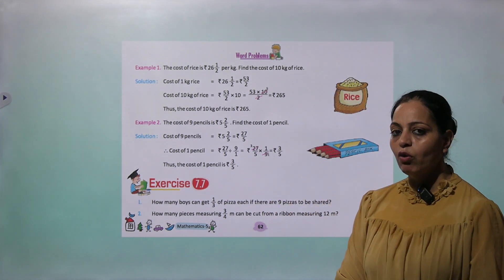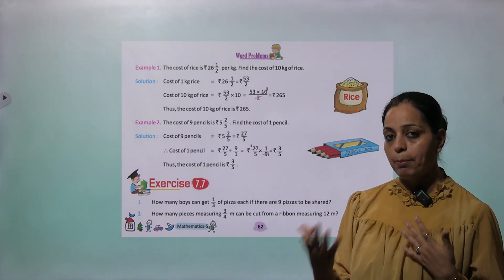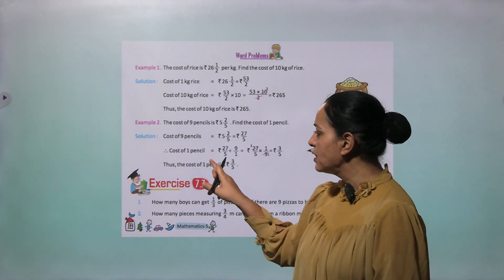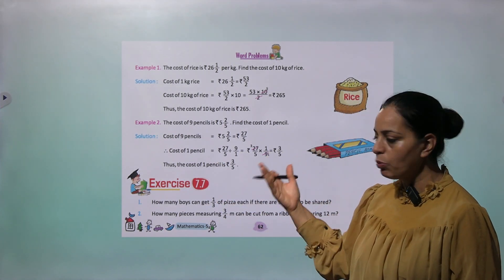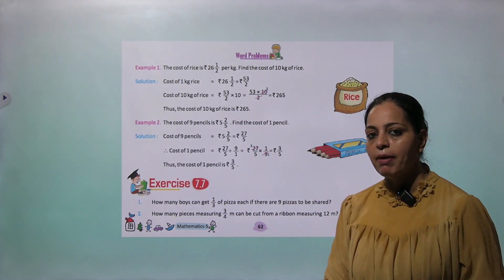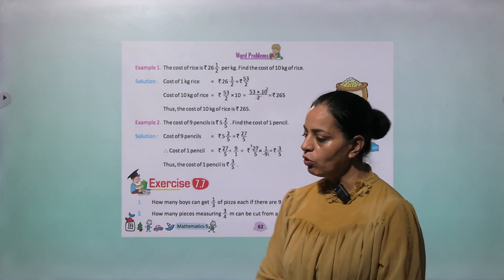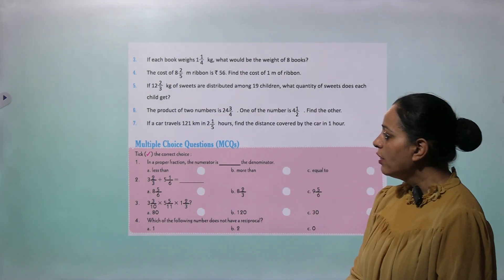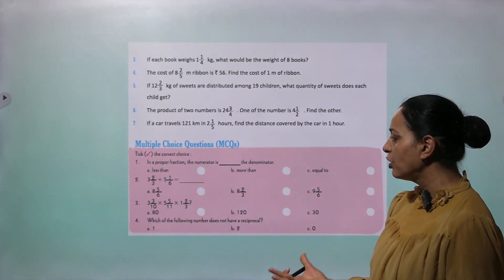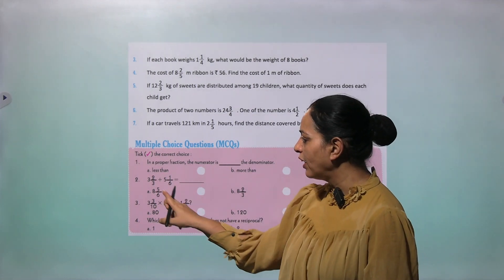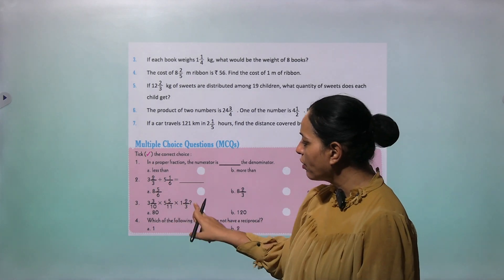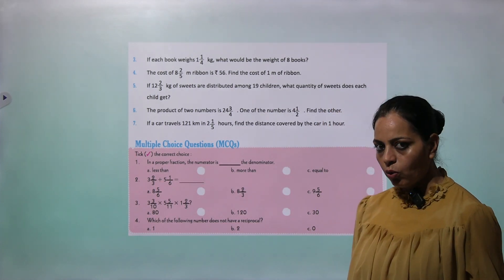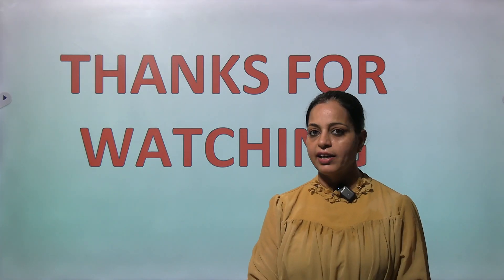Example 2: The cost of 9 pencils is rupees 5 whole 2 by 5. Find the cost of 1 pencil. Change to improper fraction: 27 by 5. Divide by 9 — take reciprocal: multiply by 1 by 9. Cancel 27 and 9 — answer is rupees 3 by 5. Exercise 7.7 is also available. MCQs: In a proper fraction, the numerator is always less than the denominator. Zero does not have a reciprocal. Thanks for watching this video. Stay connected with us till the next video. Have a good day.